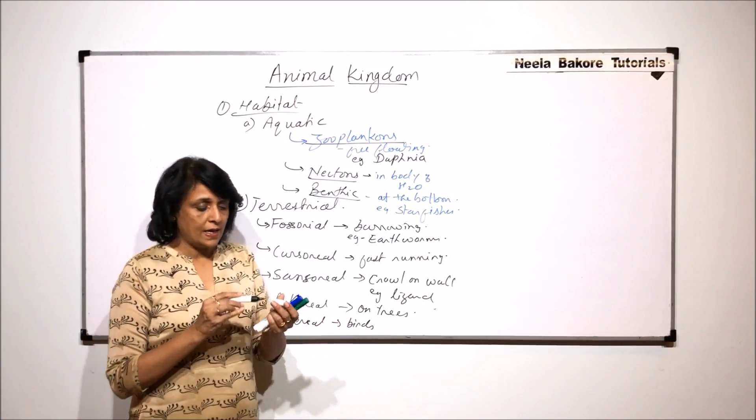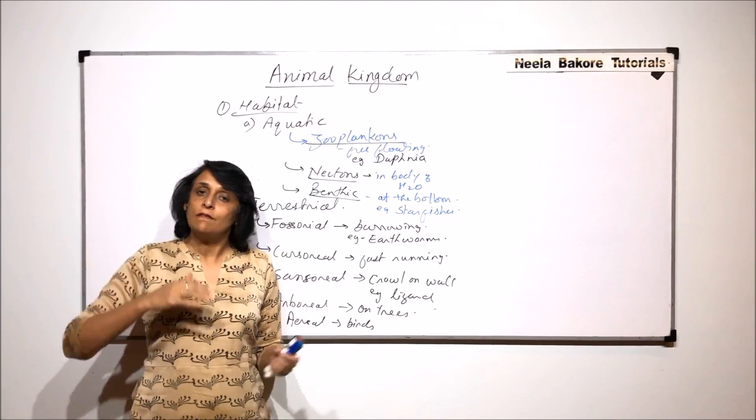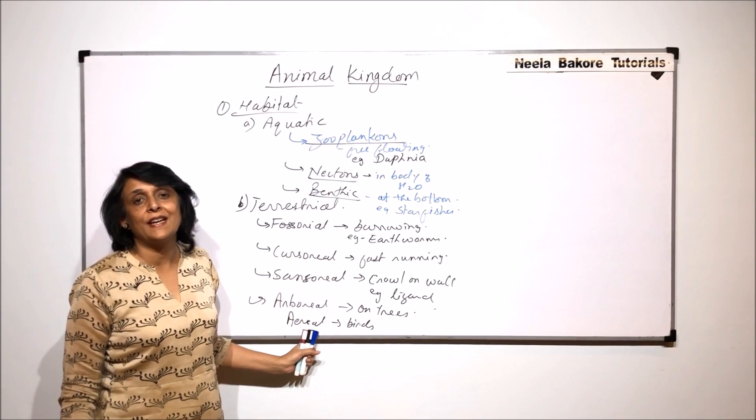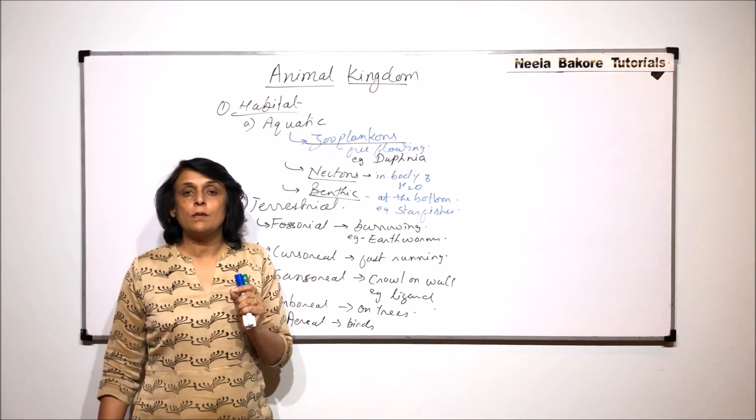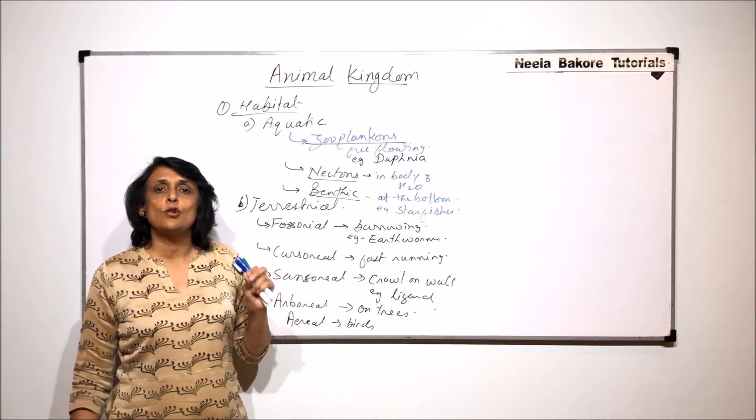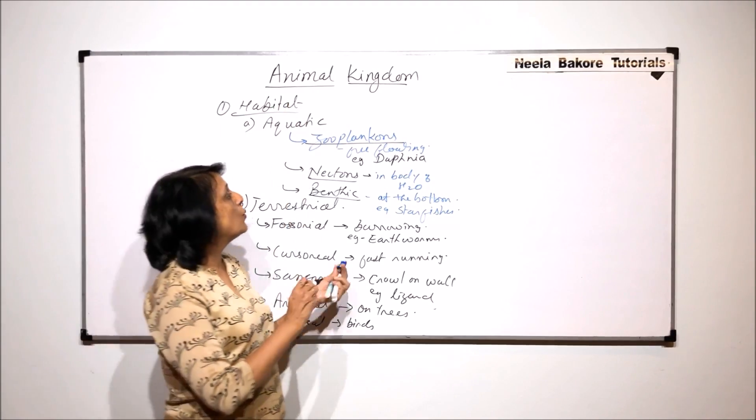That means in terrestrial also we have so many varieties of these animals. So this is what I was talking about that in animal kingdom we find diversity in so many ways. This is one that we have talked of. Let us talk of one more.